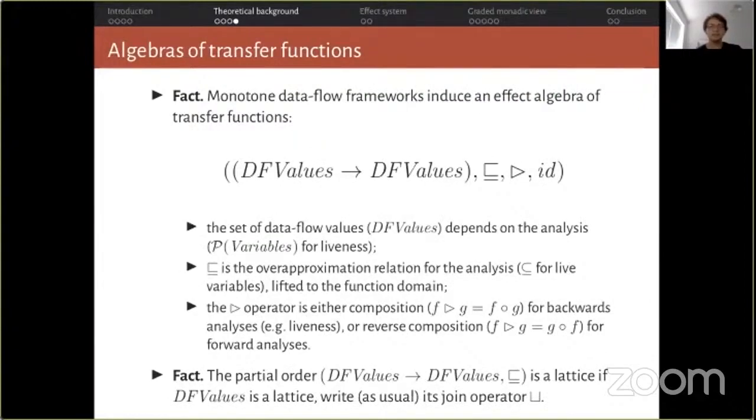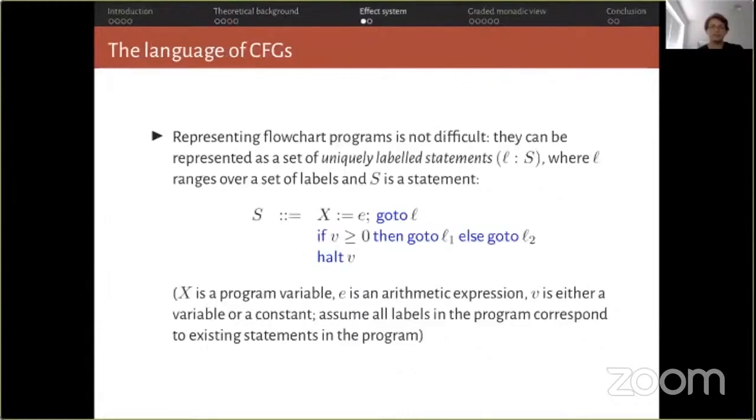In the case of live variables, this is a function from values out to values in. And here are the transfer functions for each individual statement. We will get back to this program later. The key insight is that transfer functions of all monotone dataflow frameworks form an effect algebra. The carrier set is that of all possible transfer functions, which are just all functions from dataflow values to dataflow values. And these depend on the analysis. Sub-effecting is the over-approximation relation for the respective analysis, lifted to the function domain. The multiplication operator is either the reverse function composition for forwards analyses or live variables.